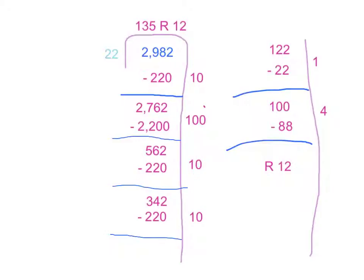Then I ended up with 342. I could take away another 220, so I did. That's ten 22s.